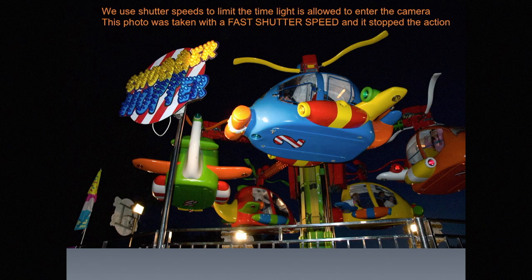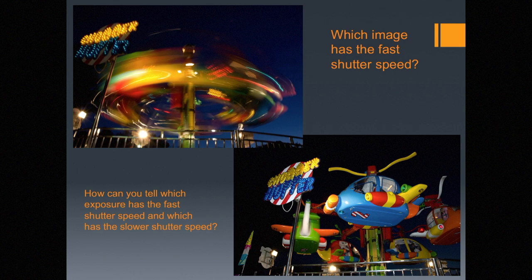We use shutter speeds to limit the time light is allowed to enter the camera. This photo was taken with a very fast shutter speed — let's call it a 250th of a second — and it stopped the action. This shot was taken at a slow shutter speed, and the action was blurred as a result; the shutter was open long enough for the subject to move. The upper left is the slower shutter speed — the camera is open long enough to register movement. On the lower right, the shutter is very quick and it stops the action.